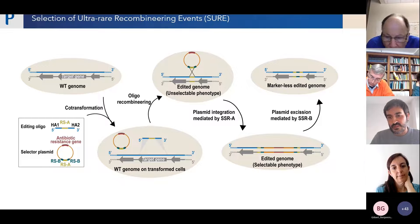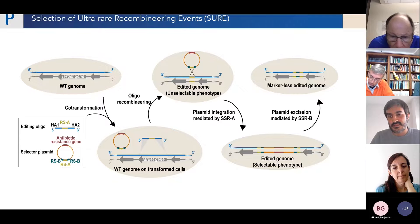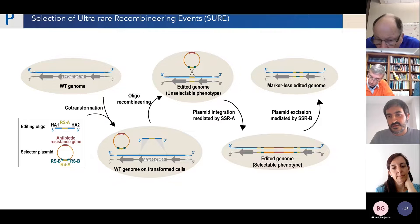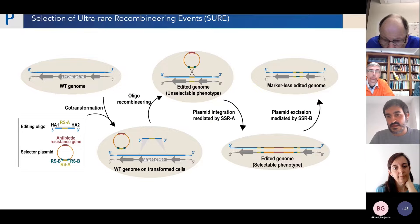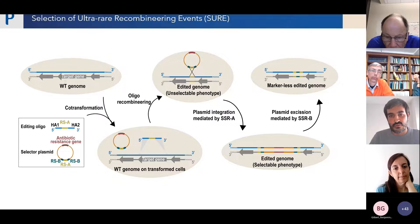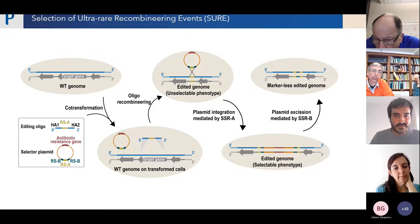The whole plasmid is inserted at the edited site, providing a selectable phenotype due to the antibiotic resistance gene. Then later we can excise this plasmid from the edited area, finishing with a markerless edited genome. It will contain a scar based on the two types of recombination sites used — first to insert and then to excise the vector from the edited area.